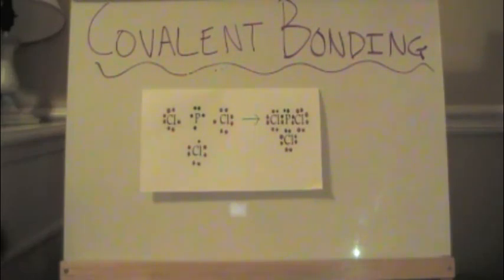Covalent bonding is all of the atoms joining. There is more than one nucleus, and all of the electrons are shared. The electrons move around every nucleus. They are each trying to have a full shell of eight.